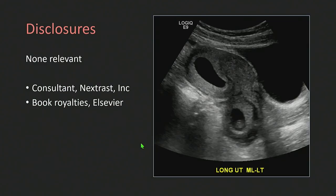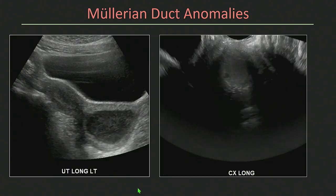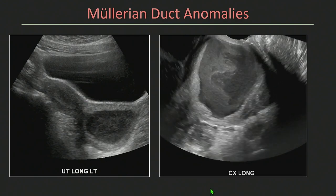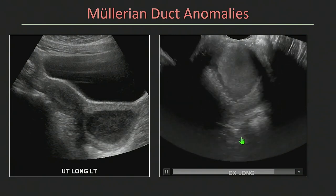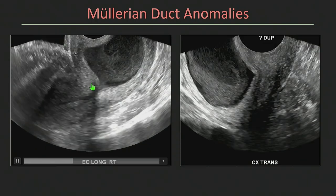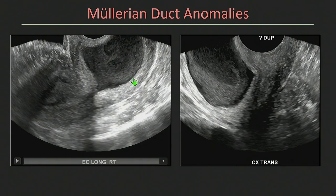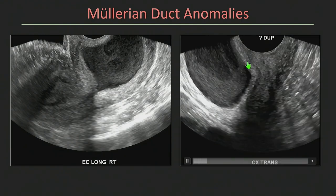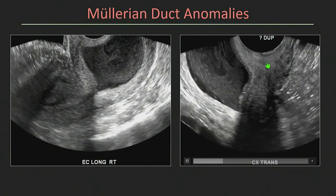These are my disclosures. Let's start with a case. This is a 30-year-old female with green vaginal discharge, no prior imaging. Here's a sagittal transabdominal longitudinal image of her uterus. You can see there's an abnormality towards the cervix. Here's the corresponding endovaginal imaging showing a large heterogeneous fluid collection in the region of the cervix and vagina. It looks like basically a big clot. You can see there's probably some retractile clot or heterogeneity of the blood products within the collection. On the transverse view, the sonographer noted there may be some sort of duplication, possibly a Mullerian anomaly.